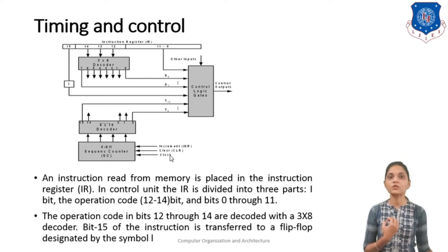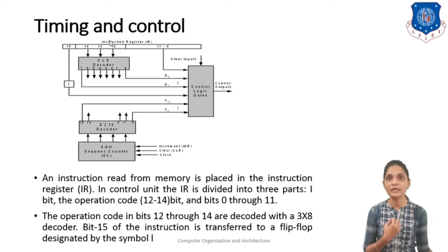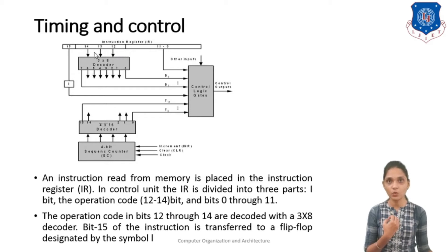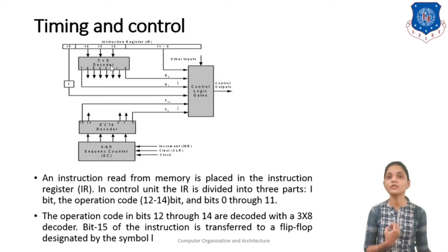The operation code in bits 12 to 14 is decoded by using this 3x8 decoder, and bit 15 — that is the I bit — is transferred to the flip flop designated by the symbol I. These 3 bits are decoded by this 3-to-8 decoder. Depending upon the value, if it is 000 then the first signal will be generated, if it is 010 the second signal is generated, if it is 011 the sixth signal is generated, and so on. So depending upon the input value, any one control signal is generated from this 3-to-8 decoder.